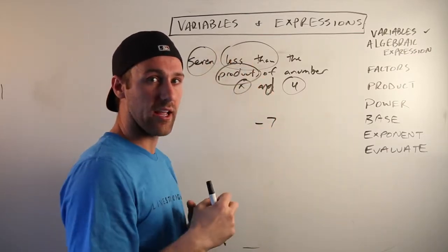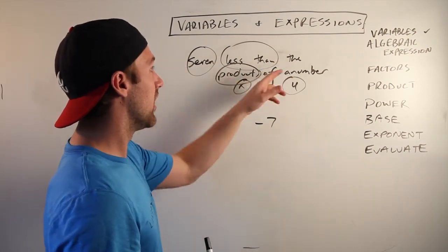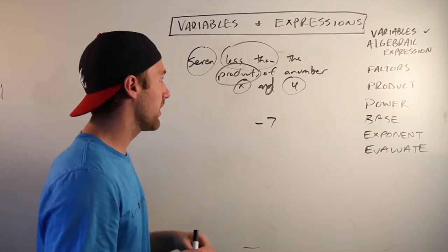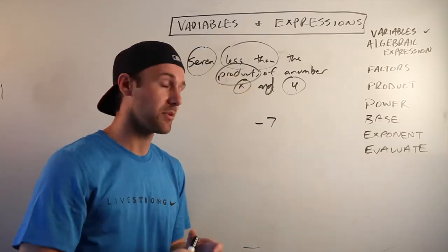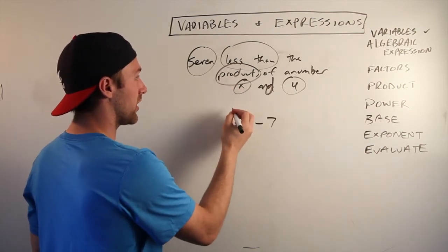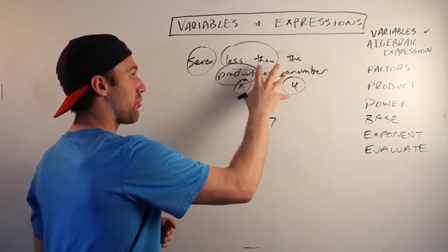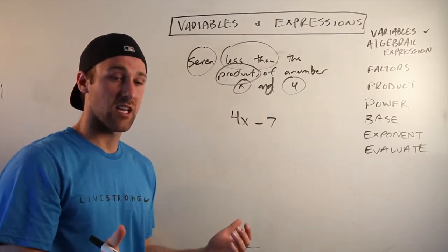Then the product of a number X and four. Okay, so we're finding product - that means that's right, multiplication. So you're multiplying X and four. So you're doing seven less than the product of X and four, so we're taking seven away from four times X. And that's how you put that in algebraic expression.